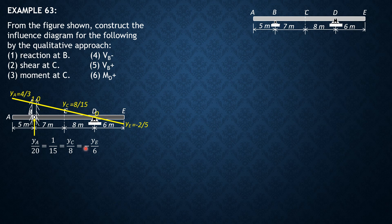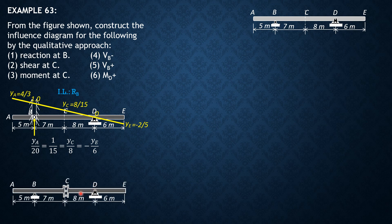For shear at C, we remove the capacity of section C to resist shear using a mechanism as shown, while there is still resistance to moment. We apply positive shear — going down at the left and going up at the right. If we push this mechanism downward, it will pivot or rotate about B and look like that. Likewise, if we push C upward, it will rotate about D. This is the influence line for shear at C.